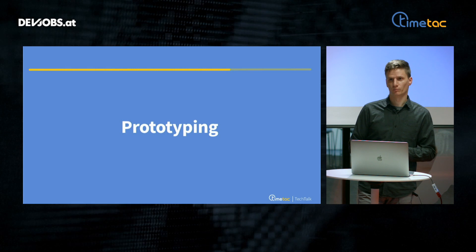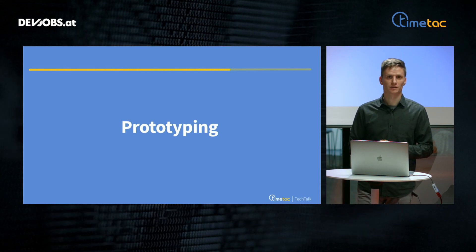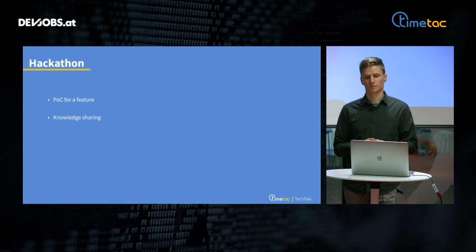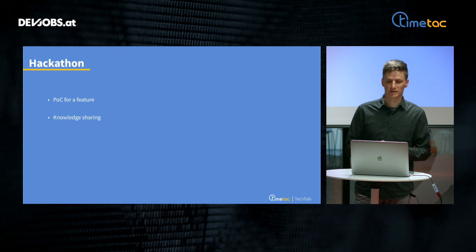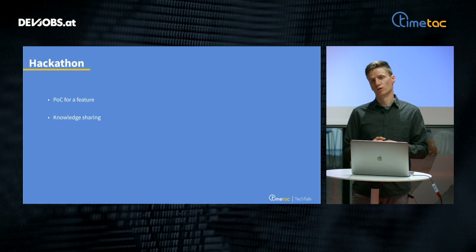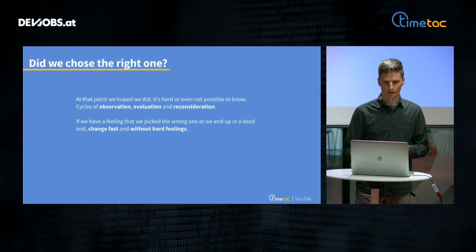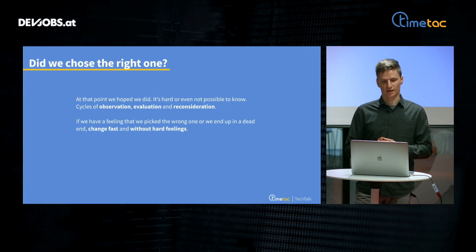Before we could switch, we wanted to make some prototypes to get everybody on board with React. So we organized a two-day company hackathon. The goal was simple: create a proof of concept for a feature so we could see how fast we can adopt it, how much actual knowledge we already have in the team, and whether we made the correct decision. Did we choose the right one? It's hard to know. That's why I suggest the team does cycles of observation, evaluation, and reconsideration. If they see they are hitting a technical limit, or just have a feeling it's not the best decision, switch fast and without hard feelings.